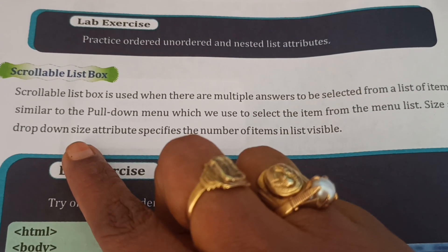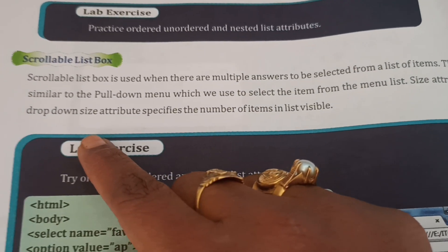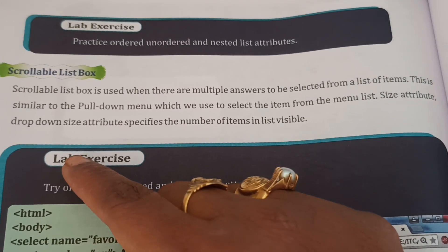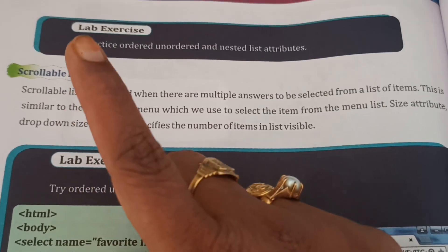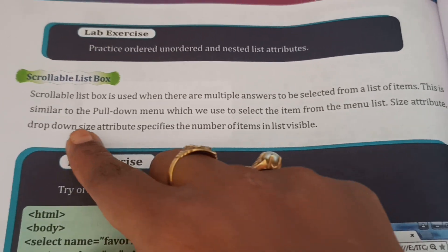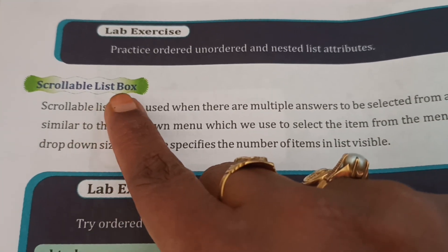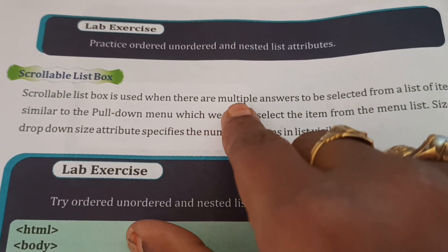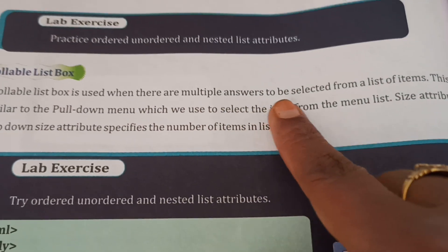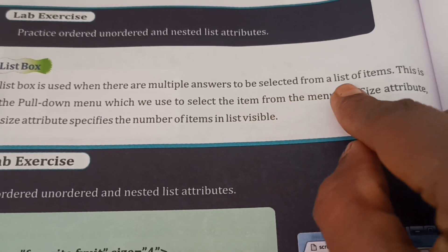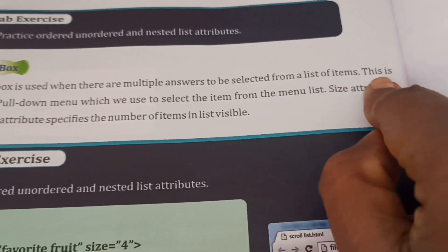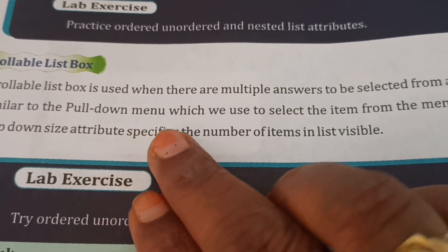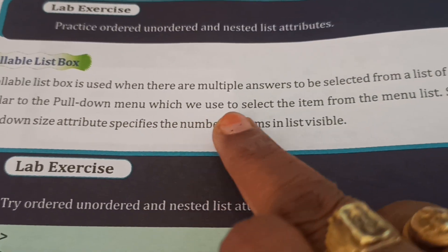Yes, this is the very last topic of HTML. After this, I am explaining the QBasic topic. Now this is the last topic of HTML. It is called a scrollable list box. A scrollable list box is used when there are multiple answers to be selected from the list items. This is similar to the pull down menu which we use.